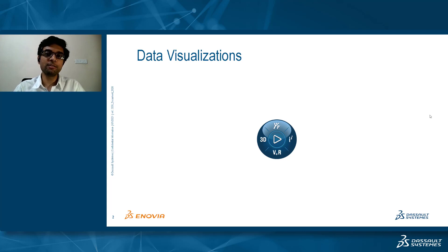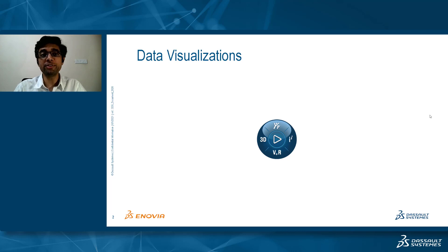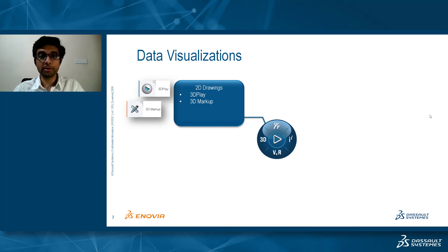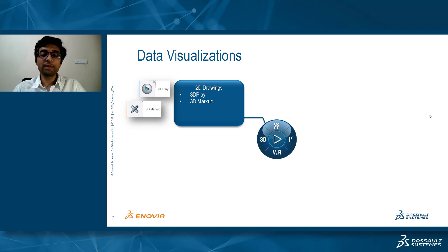Today we will see the segregation of what the different data types are and how you can visualize them using different sets of applications in the 3D Experience Platform, and what are the key benefits of each application. To start with, one type of data you always encounter is 2D drawings. These drawings might come from 3D Experience CATIA, CATIA V5, or other CAD tools like DXF or AutoCAD.